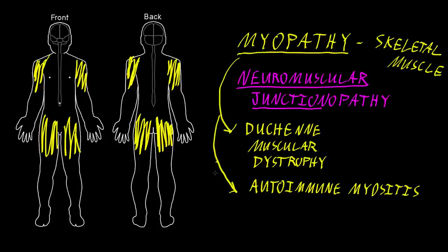However, the most common cause of myopathy is probably toxic, because there are a number of medications in particular that can cause diffuse abnormalities of skeletal muscle — especially drugs called corticosteroids, which are common medications used for many inflammatory conditions.